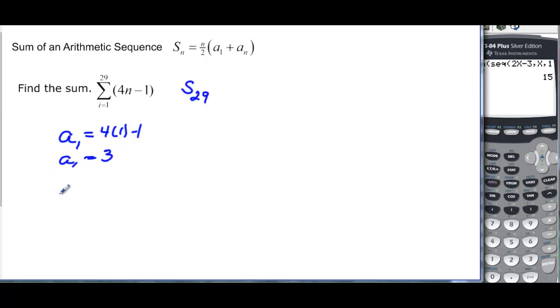And I need to know a_n, so a_29 is going to be 4 times 29 minus 1. And 4 times 29 happens to be 116, and I subtract 1, that's going to be 115. And you can do it in your calculator if you wanted to, 4 times 29 minus 1.